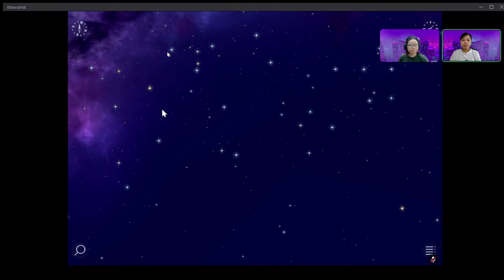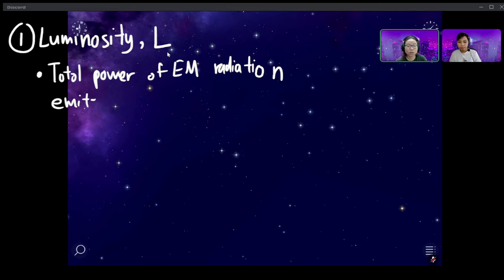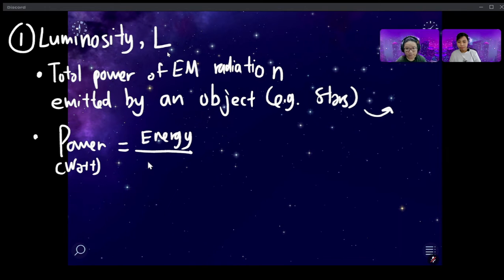So the first thing we need to know is luminosity. So that term here is something you want to write down in your notes. Luminosity, we use a symbol L. You can think of luminosity as very similar to power because when we talk about brightness and waves, it's still energy transfer across a distance. So luminosity is the total power of EM radiation because light is electromagnetic radiation emitted by an object. And in this case, what we're looking at in the night sky, stars.